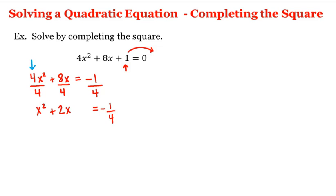So the next step then in completing the square is that we take 1 half the coefficient of x, which in this case is 2. And 1 half of 2 is 1.